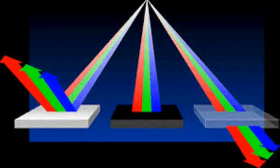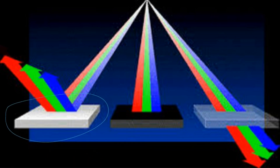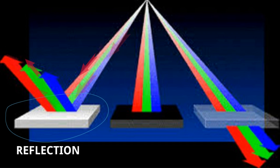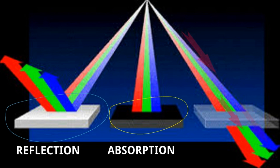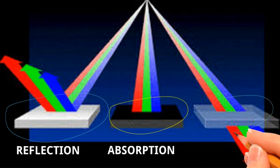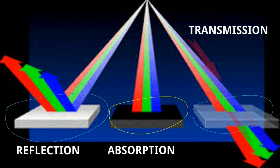In a simple diagram we will understand reflection, absorption, and transmission. For reflection, light comes from the source, falls on the object, and bounces off — that is reflection. For absorption, the object absorbs all the light coming from the source. For the third case, light passes through the object completely — this is known as transmission.